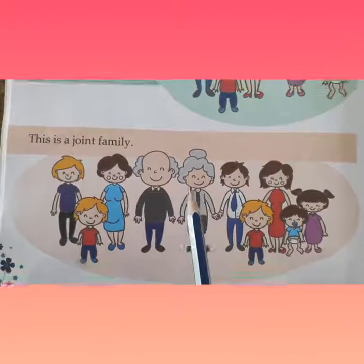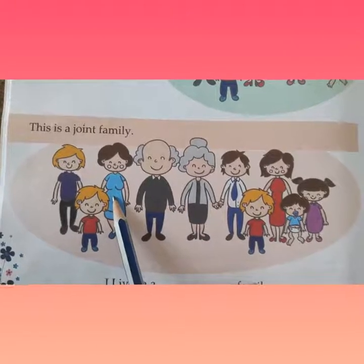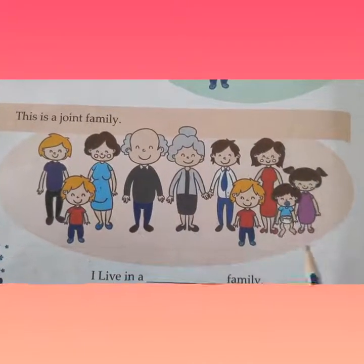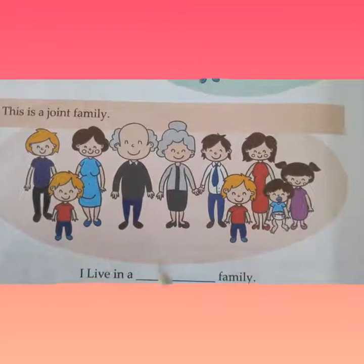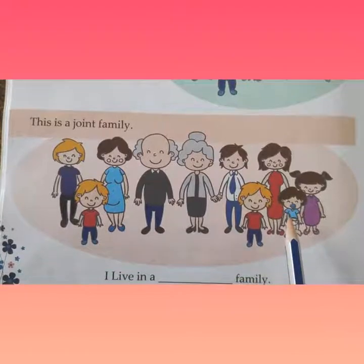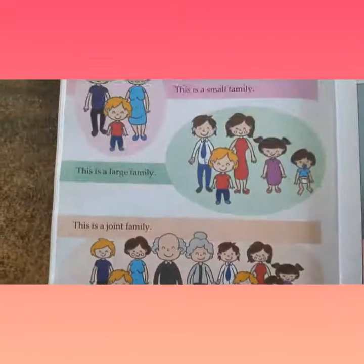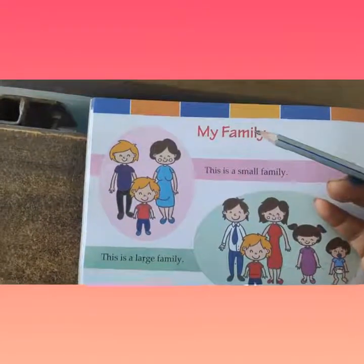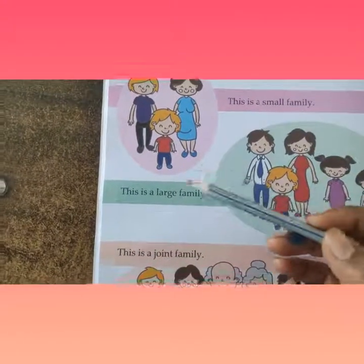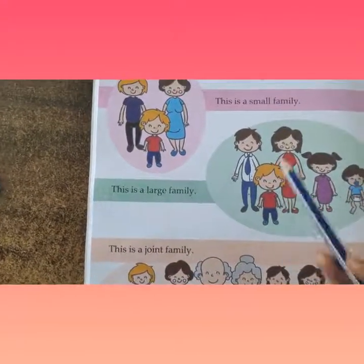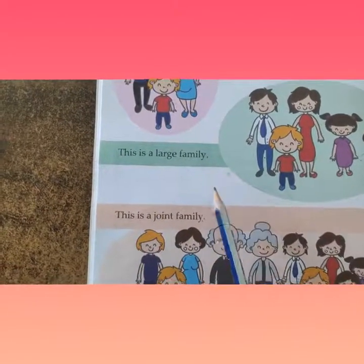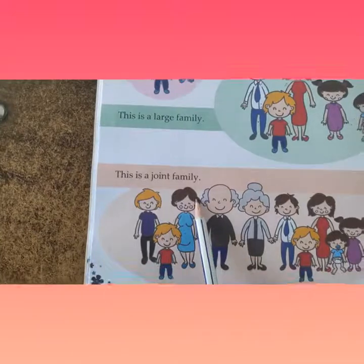When grandparents, parents, brother, sister and uncle's family live together, that is called a joint family. So children, in this lesson you learned that there are three types of families: small family, large family and joint family.